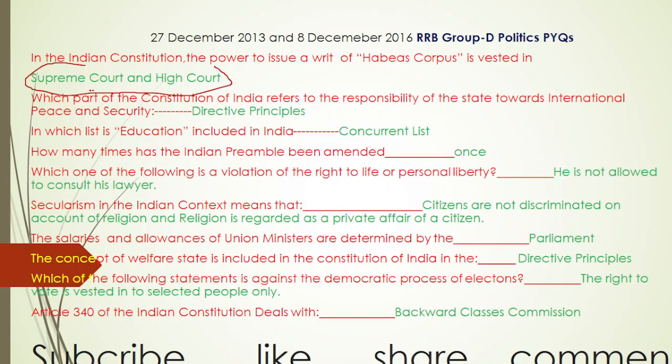The second question: Which part of the Constitution of India refers to the responsibility of the state towards international peace and security? The correct answer is the Directive Principles. In the Directive Principles, our state is responsible for making international peace and security.